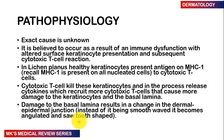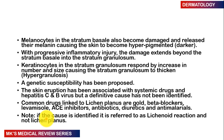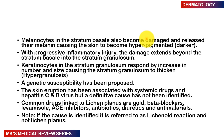Whenever you get damage to the basal layer of the epidermis, this results in changes at the dermal-epidermal junction. Normally the dermal-epidermal junction is very smooth and looks like a sine wave, but instead it transitions and becomes angulated or saw-toothed. The melanocytes present in the stratum basale also become damaged and release their melanin, meaning there may be hyperpigmentation where the skin appears darker. With progressive inflammation, damage extends beyond the stratum basale into the stratum granulosum.